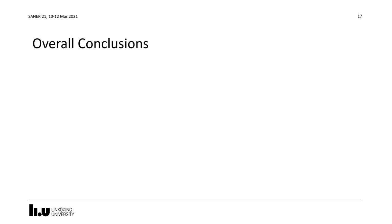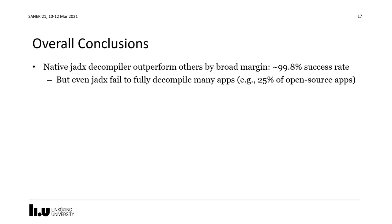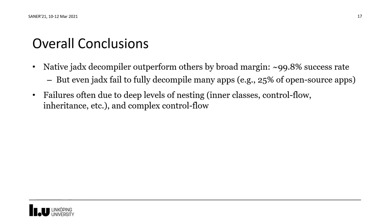Wrapping up with overall conclusions: the native JADX decompiler outperformed others by a broad margin, but even JADX failed to fully decompile many apps — for example, 25% of open source apps could not be fully decompiled. We observed that failures were often due to deep levels of nesting of various kinds and complex control flow, which seems to cause some kind of resource exhaustion in decompilers — such as reaching a maximum recursion depth, hitting an internal limit, or filling up some buffer — causing the decompiler to error out.